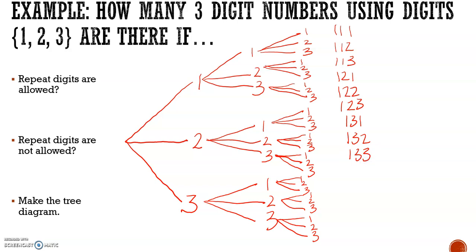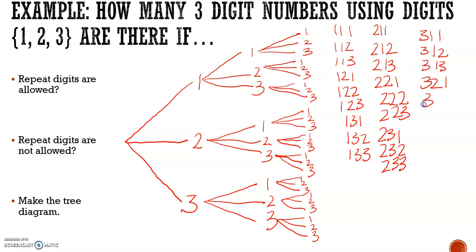Our options for our first digit being a 2 are 211, 212, 213, 221, 222, 223, 231, 232, 233. Then our options with the first number being a 3 are 311, 312, 313, 321, 322, 323, 331, 332, 333. With repeat digits being allowed, we can count them all up, and there are 27 options with repeat digits allowed.